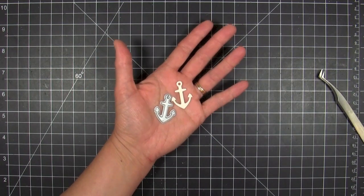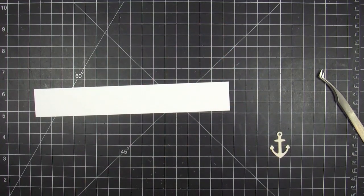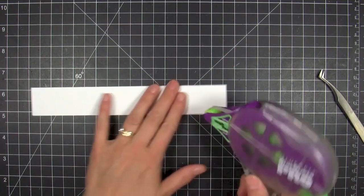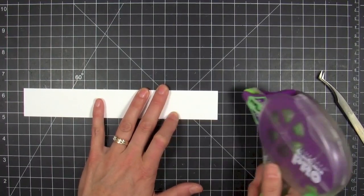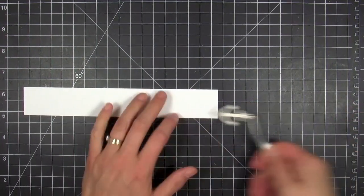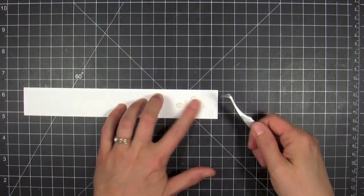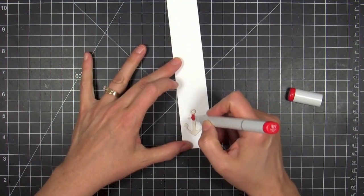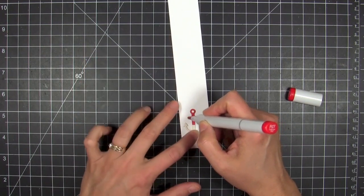Then I'm going to die-cut an anchor from some crafter board, and I love this because it creates kind of a chipboard thickness. I'm going to mount it temporarily to a scrap piece of cardstock because I want to color it and I don't want it sliding around—I don't want to get Copic marker all over my fingers. Once I have that in place, I can go ahead and take my markers and just start coloring. That will help me keep that in place without it slipping and sliding.